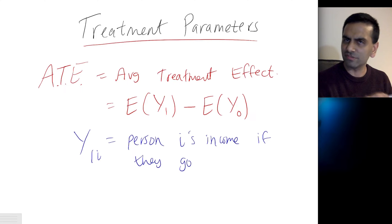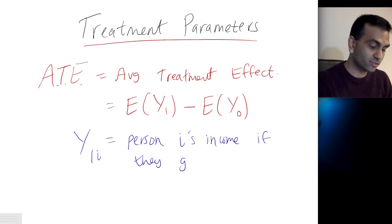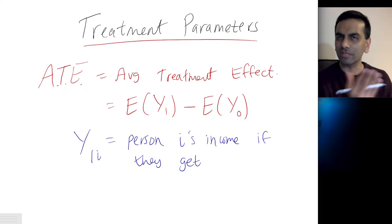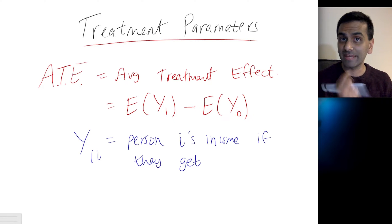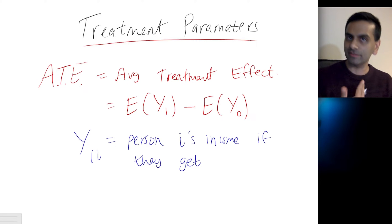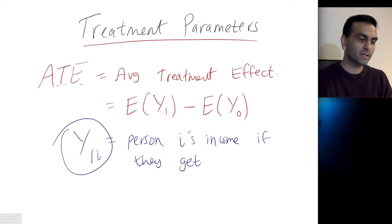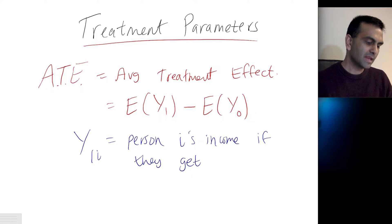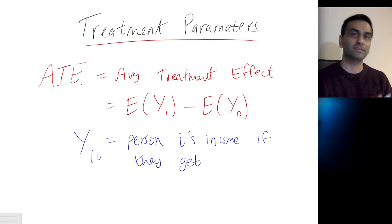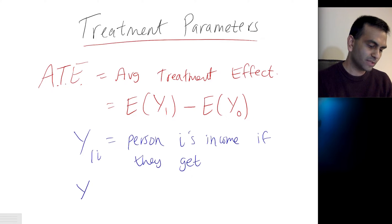The treatment vocabulary usually comes from the medical field — literally, if they get the drug, like cold medication, then they're getting the treatment, and the outcome would be how many days it takes for their cold to go away. If they get the treatment, their outcome value is called Y1. But if that same person doesn't get the treatment — their counterfactual — that's their Y0.